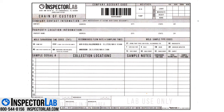The important collection information for the samples must be completed on the chain of custody form so the laboratory can process and analyze your samples accurately and without delay. A properly filled out chain of custody also ensures you and your clients that all samples you collect can be traced to the correct address and sample location at the collection address.